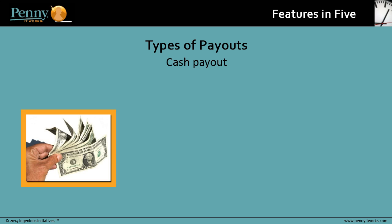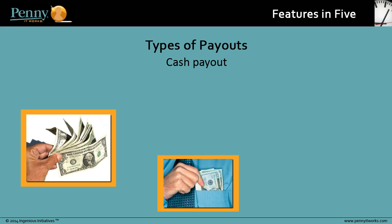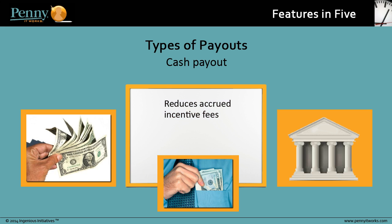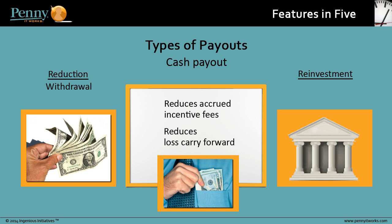A cash payout removes capital from the investor's account and lets them choose whether they are paid the amount or it is reinvested back into the fund. It has the same impact as a withdrawal, in that it reduces the accrued incentive fees and any loss carry forward. The reduction transaction is a withdrawal, and the possible reinvestment is a contribution.